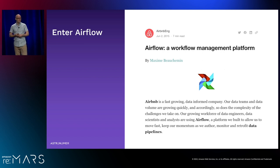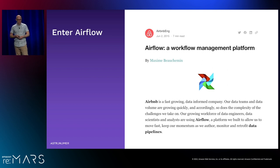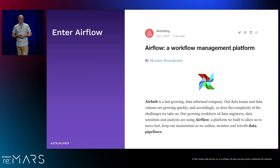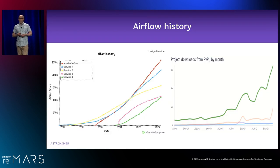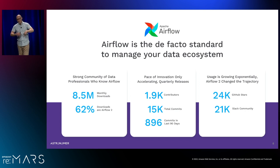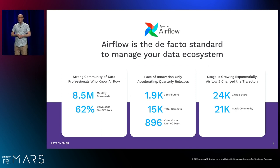Airflow was developed by Airbnb for managing all of their data pipelines — from financial year-end reports to daily reports to predictive models deployed to endpoints serving their website. The team there built a management platform for data orchestration which they called Airflow, which was eventually open-sourced. It's now a top-level project in the Apache Software Foundation, and it's been doing remarkably well — about 9 million downloads a month and a very active community.